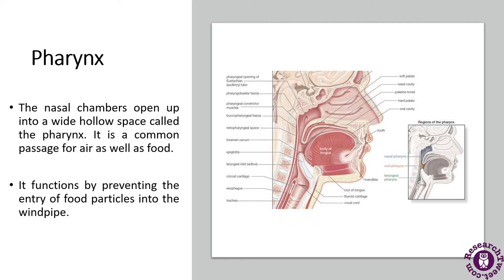The epiglottis directs food into the gastrointestinal tract. For example, we cough when we eat or when we are talking and accidentally swallow something into the windpipe. In that situation, the epiglottis comes into picture — it is forced to open for the air to exit outwards and prevent food from entering the windpipe. This triggers a cough reflex.